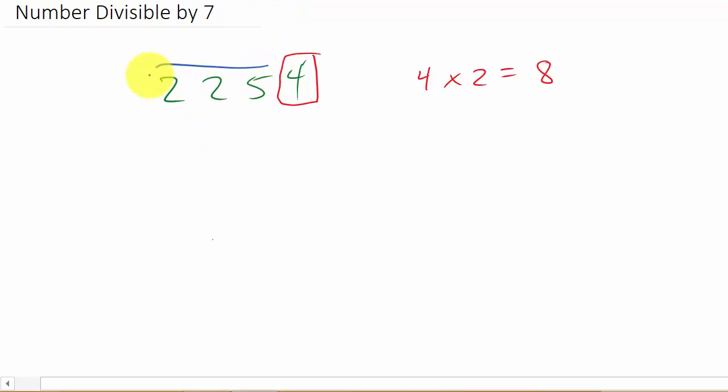Subtract the 8 from the remaining digits. So 225 minus 8, that's going to be 217.